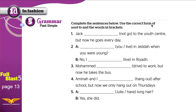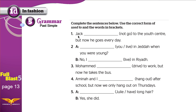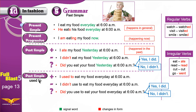Let's work on an exercise. Use the correct form of 'used to' with the words in brackets. If the sentence is positive, don't use 'did' or 'didn't' — just use 'used to' with -d. If it's negative or a question, use 'didn't' or 'did' and 'use' without -d. Example one is negative: didn't use to go.